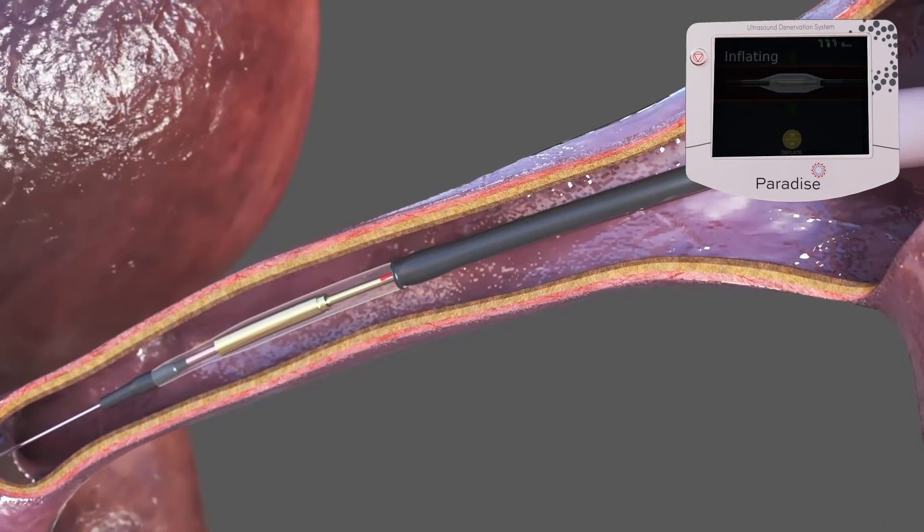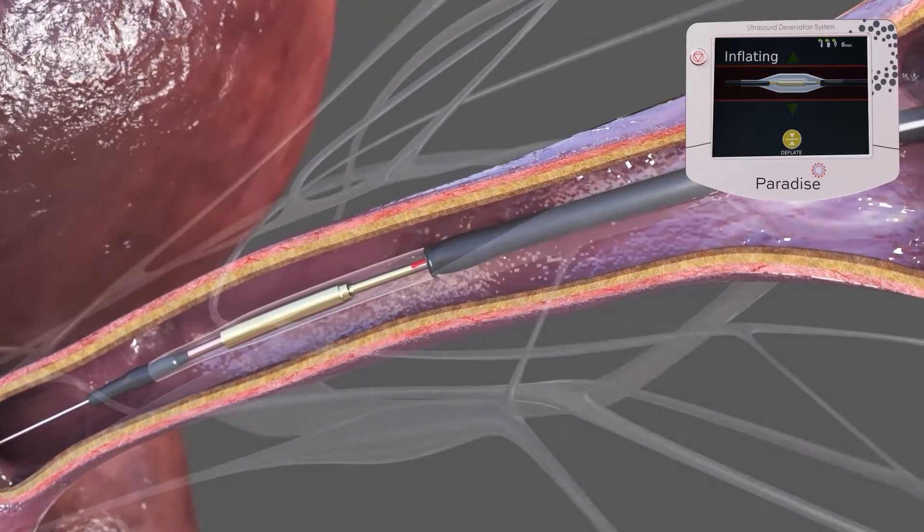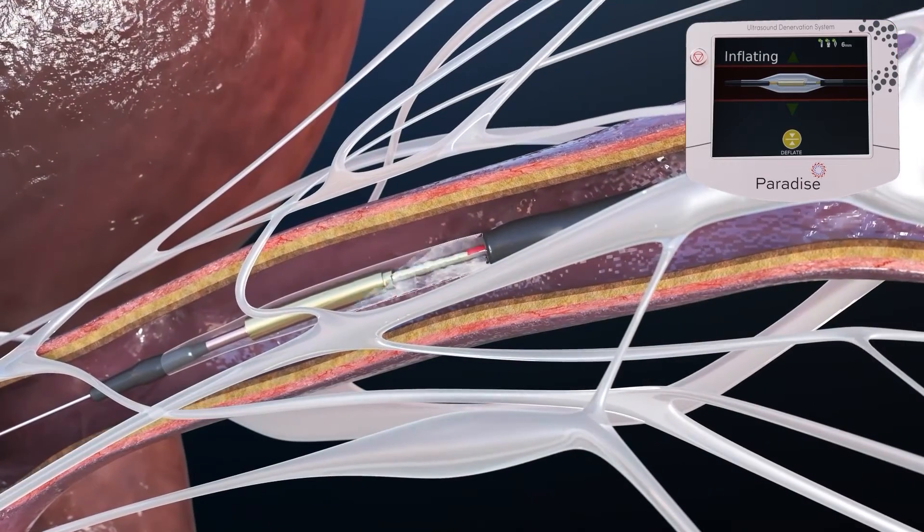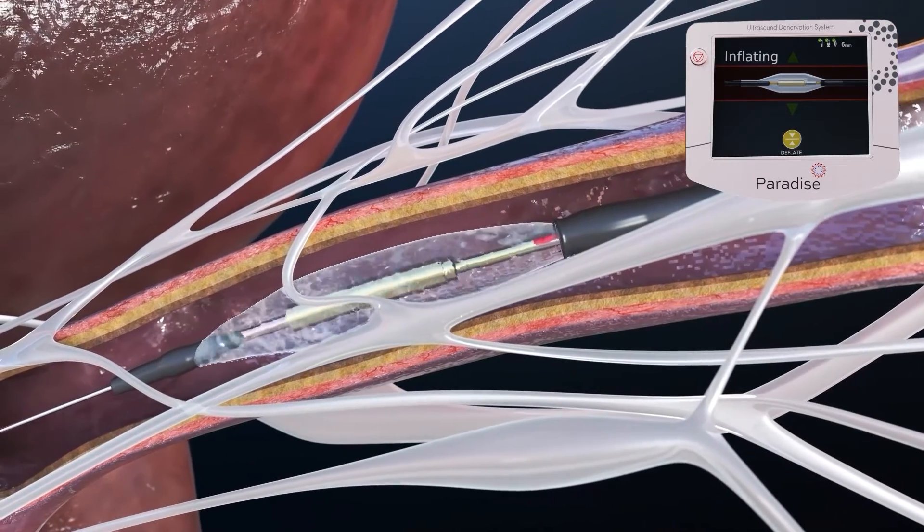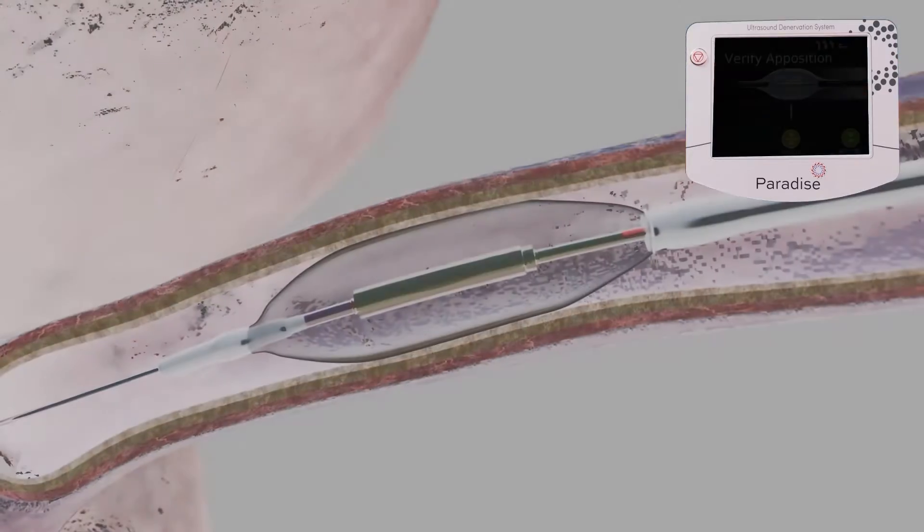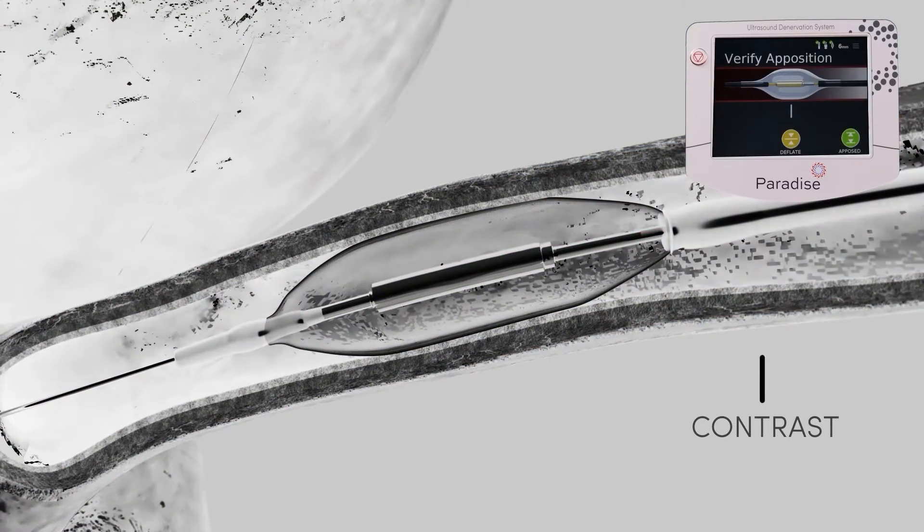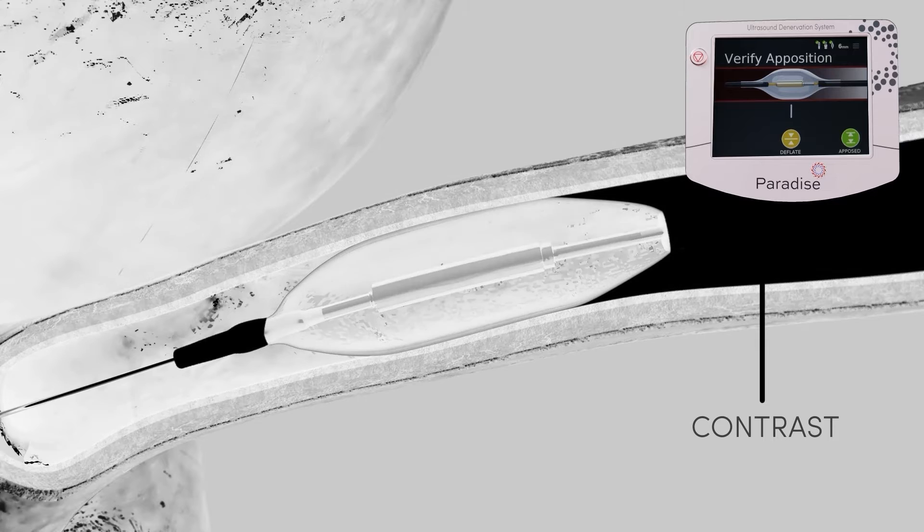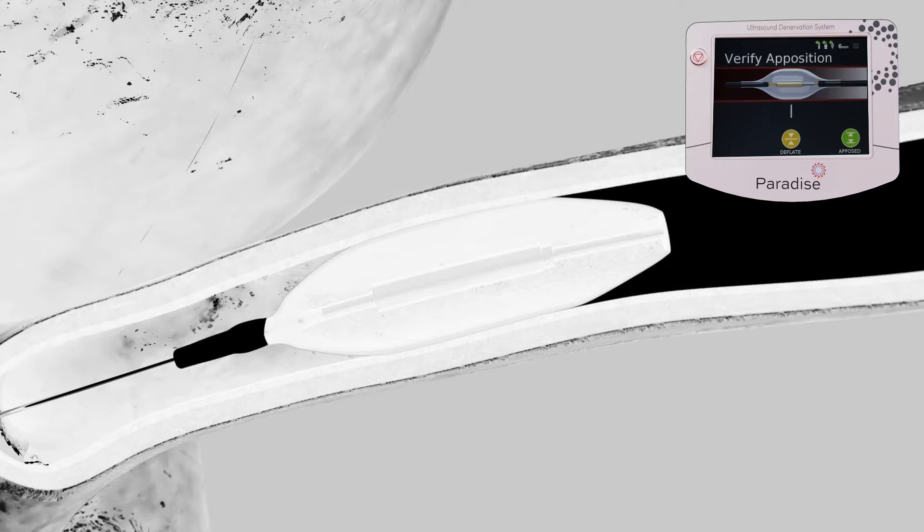After the catheter is placed, the balloon is inflated with constant low pressure managed by the generator. The controlled pressure allows the balloon to gently contact the vessel wall, centering the ultrasound transducer in the artery. Apposition of the catheter is confirmed with a small amount of contrast fluid.